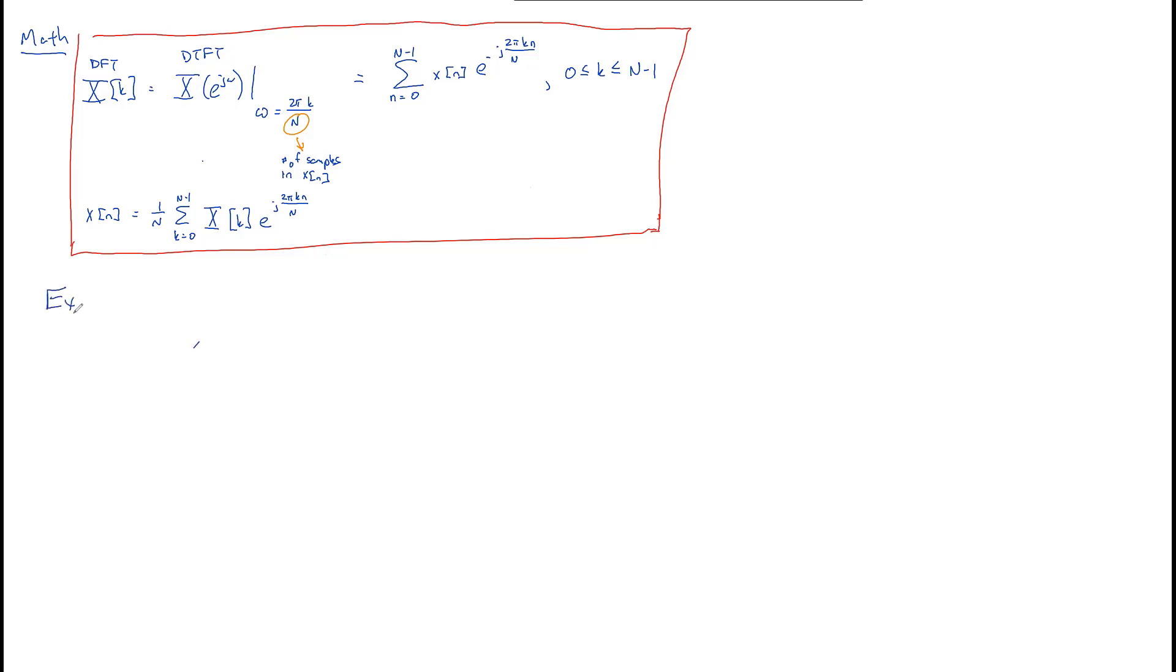Let me give an example. Consider a finite length sequence, 5 long, and it's this sequence. It's 1 at n equals 0, and it's 0 otherwise.